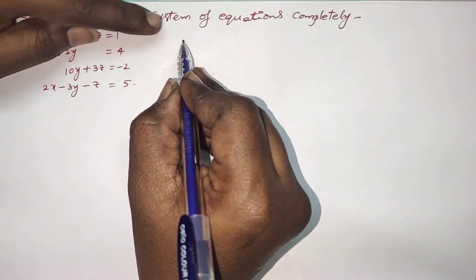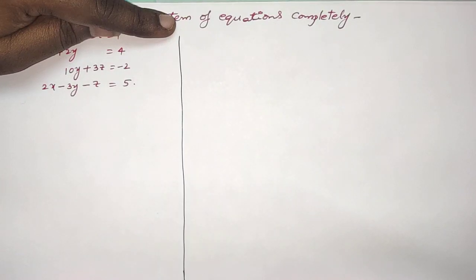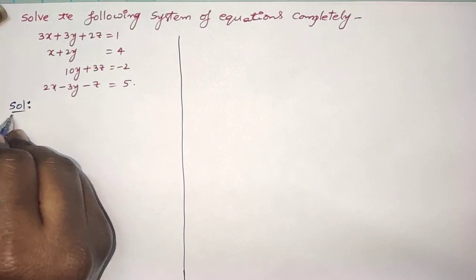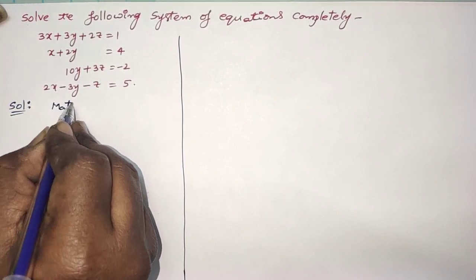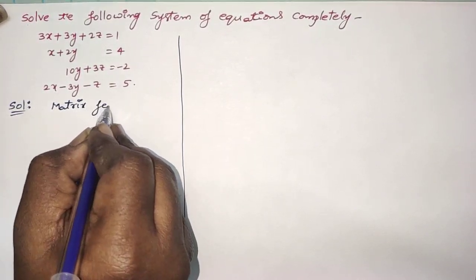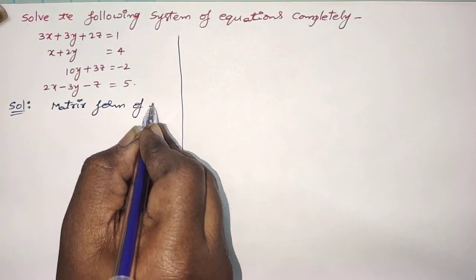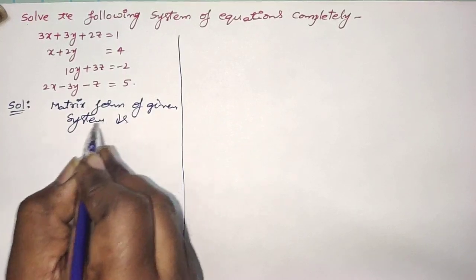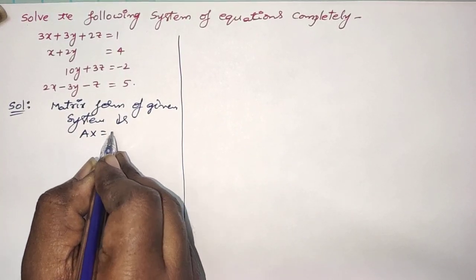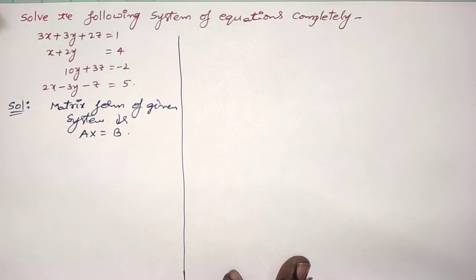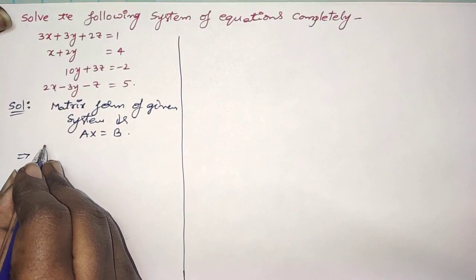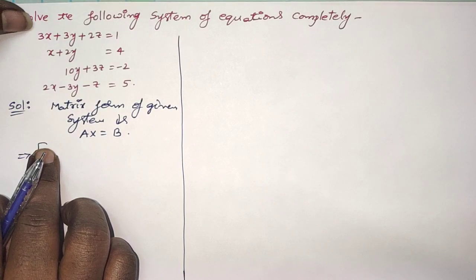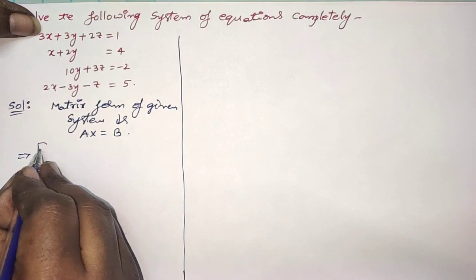First, as usual, we have to write the matrix form. What is the matrix form of this given system? The matrix form of the given system is Ax = P. What is A here? In the first row, we have to write the coefficients of the variables in the first equation.